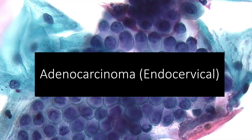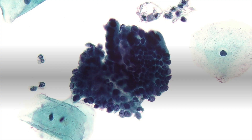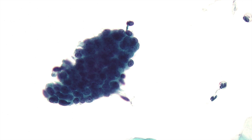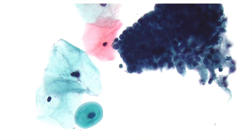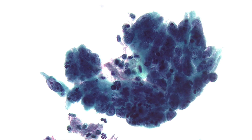Now we'll discuss adenocarcinoma endocervical type. In this group, abundant abnormal cells are typically present with columnar configuration. Liquid-based preparations show more three-dimensional clusters. A suggestion of clinging diathesis is noted at the edges of the cell group, though this is less prominent in liquid preparations. In poorly differentiated cases, disorganization is more marked, with cellular pleomorphism, nuclear overlap, increased nuclear-to-cytoplasmic ratios, clinging diathesis, and easily noted apoptosis and mitotic figures.